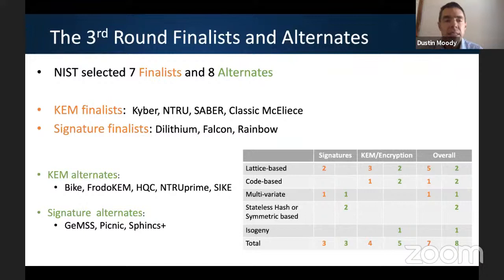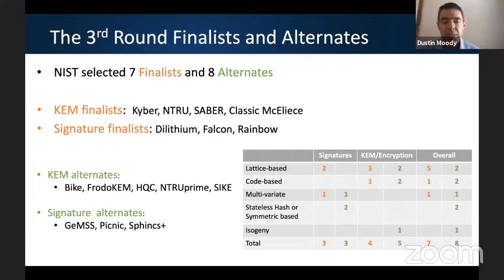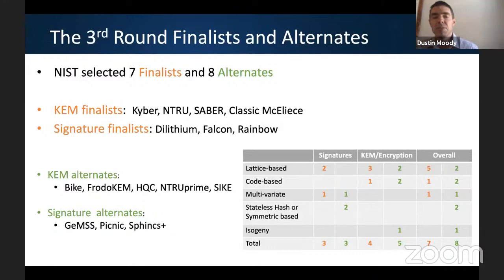For the third round, the seven finalists and eight alternates are: KEM finalists — Kyber, NTRU, Saber, and Classic McEliece; signature finalists — Dilithium, Falcon, and Rainbow; KEM alternates — BIKE, FrodoKEM, HQC, NTRU Prime, and SIKE; signature alternates — GeMSS, Picnic, and SPHINCS+. We tried to maintain diversity of algorithms while reducing the number, though there were some very difficult decisions and we had to eliminate some good schemes to narrow things down.